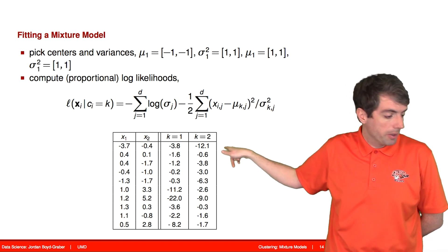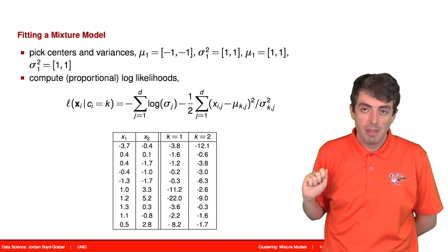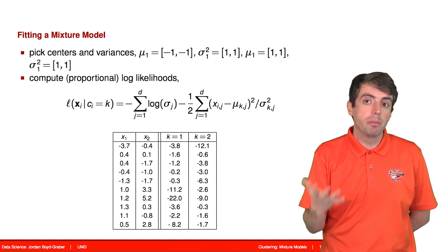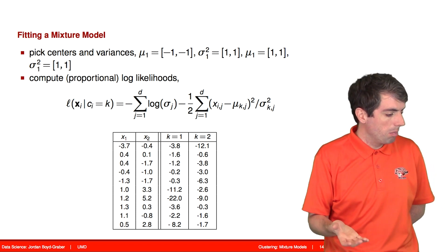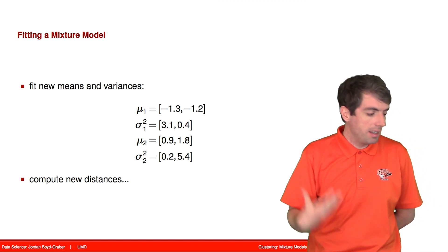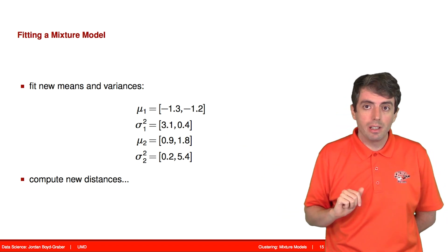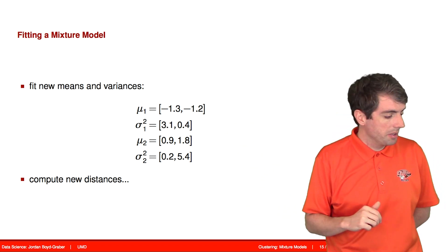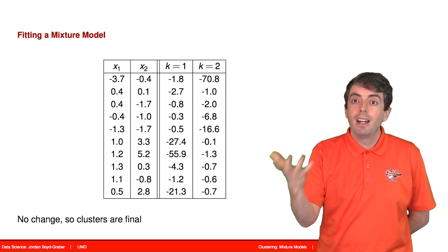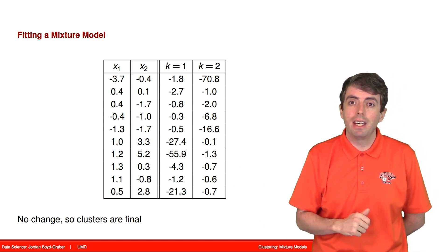We compute the likelihood for each point, and we get a likelihood for each cluster. We can then see which cluster is more likely for each of the points. We recompute the means and the variance to compute new clusters. And so here are the new clusters that we get as a result. And then we keep doing this until the clusters don't change, and we have a new answer.